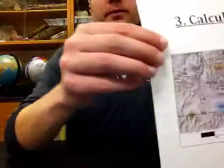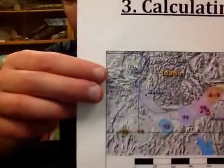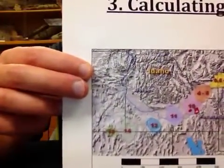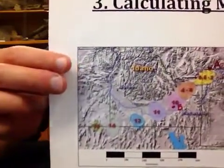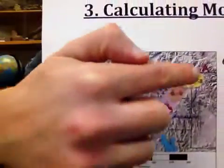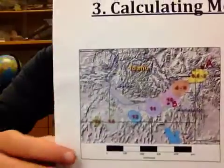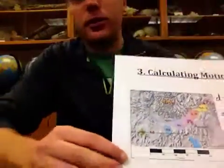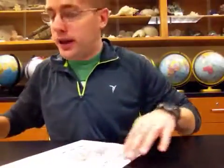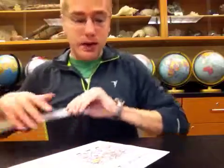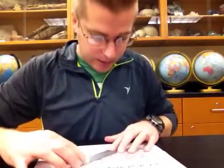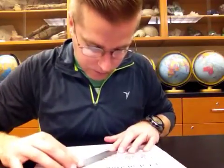What we are going to do is use the velocity equation, distance over time, to calculate the rate the plate has moved over the last 10 million years over the Yellowstone hot spot. In order to do that, the first thing we need to do is measure the distance A to B with our ruler, and we find that is 4.7 centimeters. So we write that down.